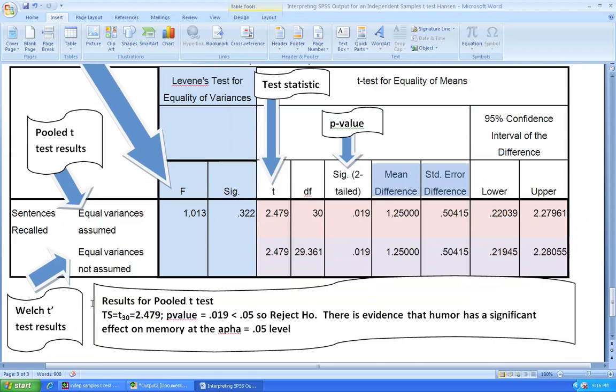When we write up the results using the pooled t-test, we see that our test statistic is a t with 30 degrees of freedom, giving us the test statistic value of 2.479. Since the p-value of the test is 0.019, less than 0.05 which is our alpha, we reject the null hypothesis. We do have evidence that humor has a significant effect on memory at the alpha equals 0.05 level.